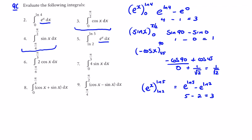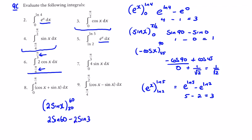That gives 3. For number 6, 2cos x: cos integrates to sin, so we get 2sin x evaluated between 60 and 30. So we have twice sin of 60 minus twice sin of 30. Sin of 60 is root 3 over 2, times 2 gives root 3. Sin of 30 is a half, so 2 times a half is 1. This gives root 3 minus 1.